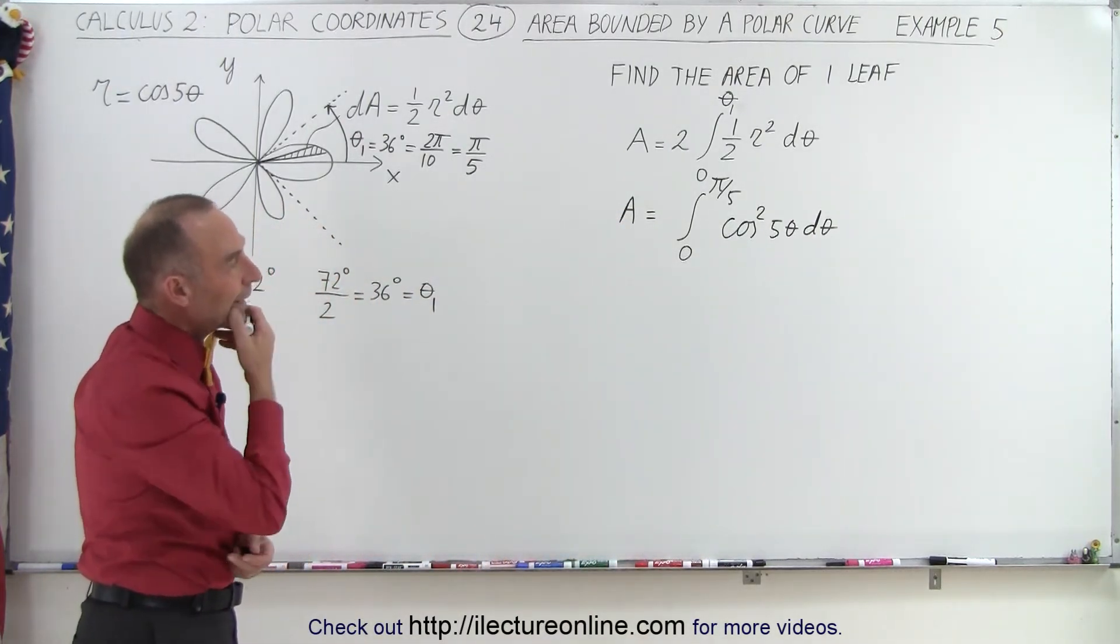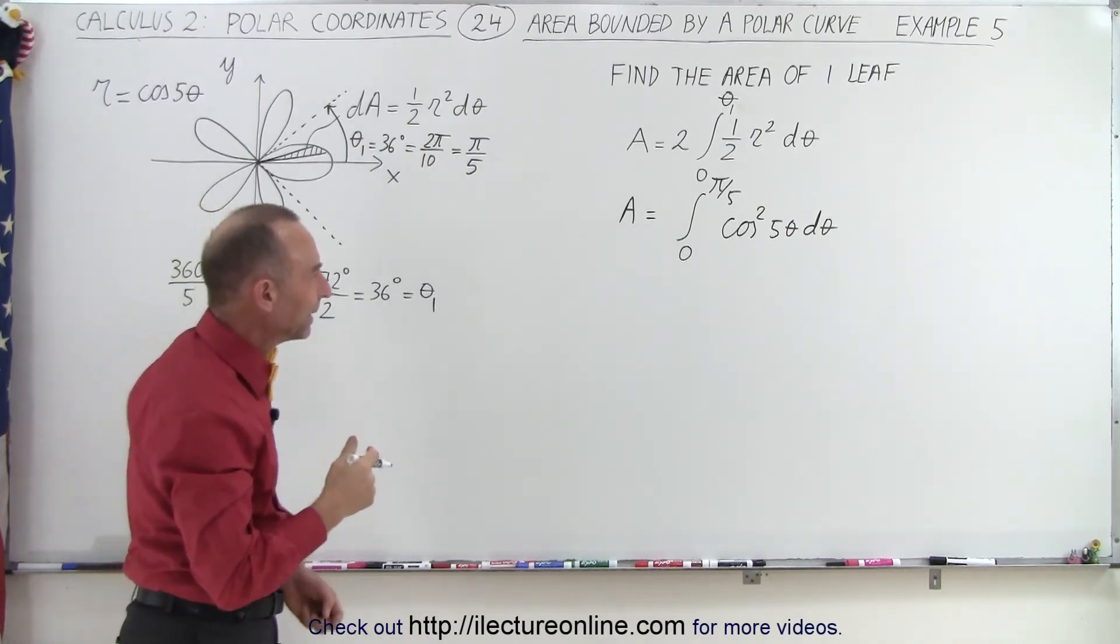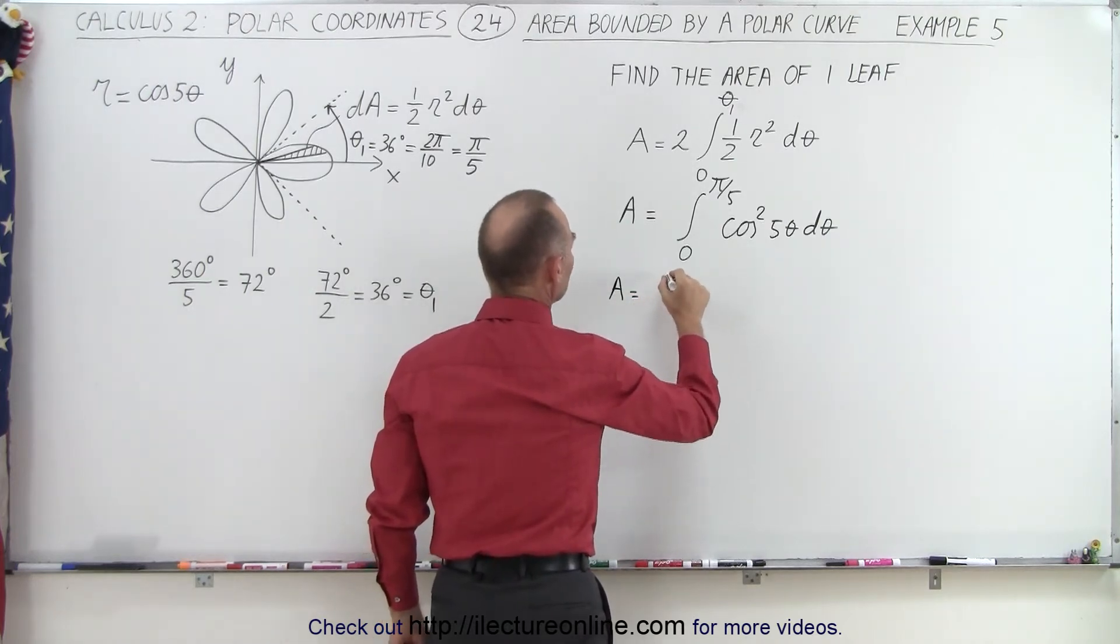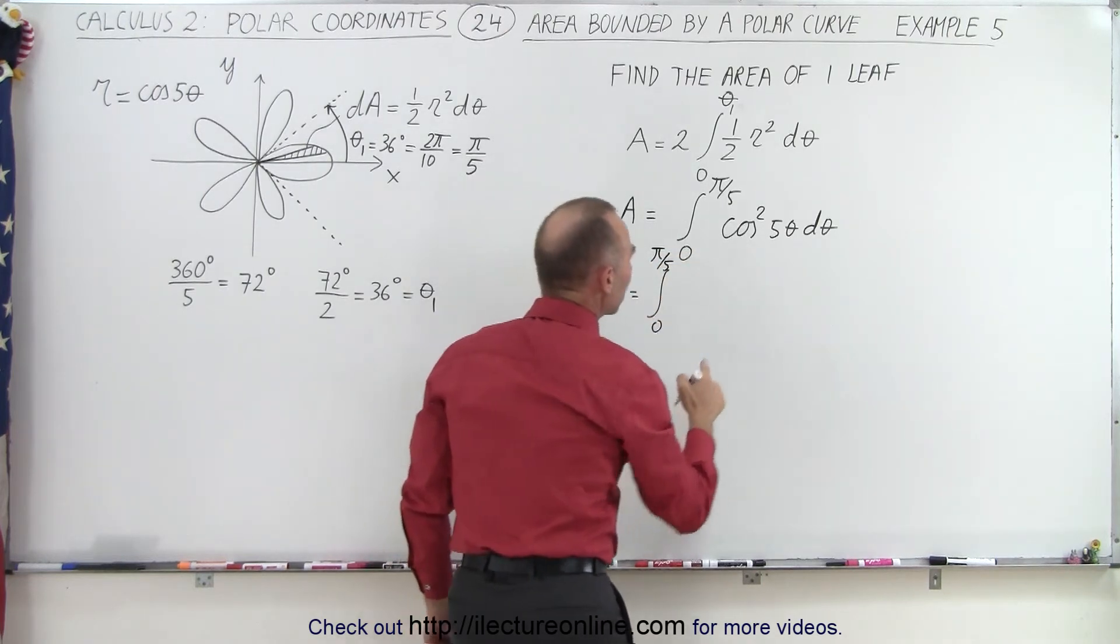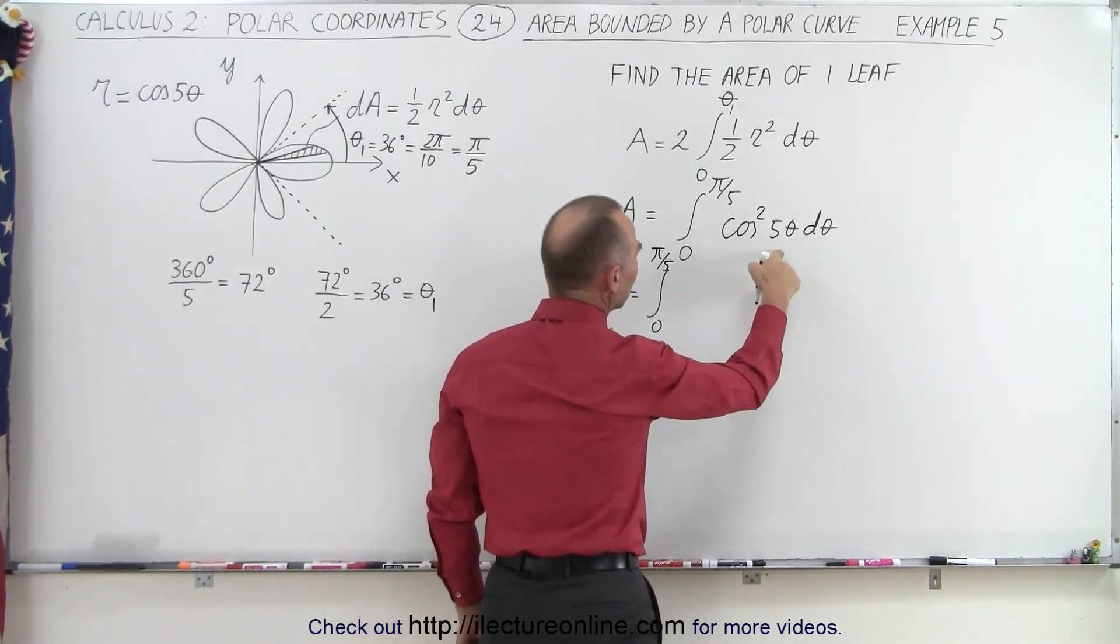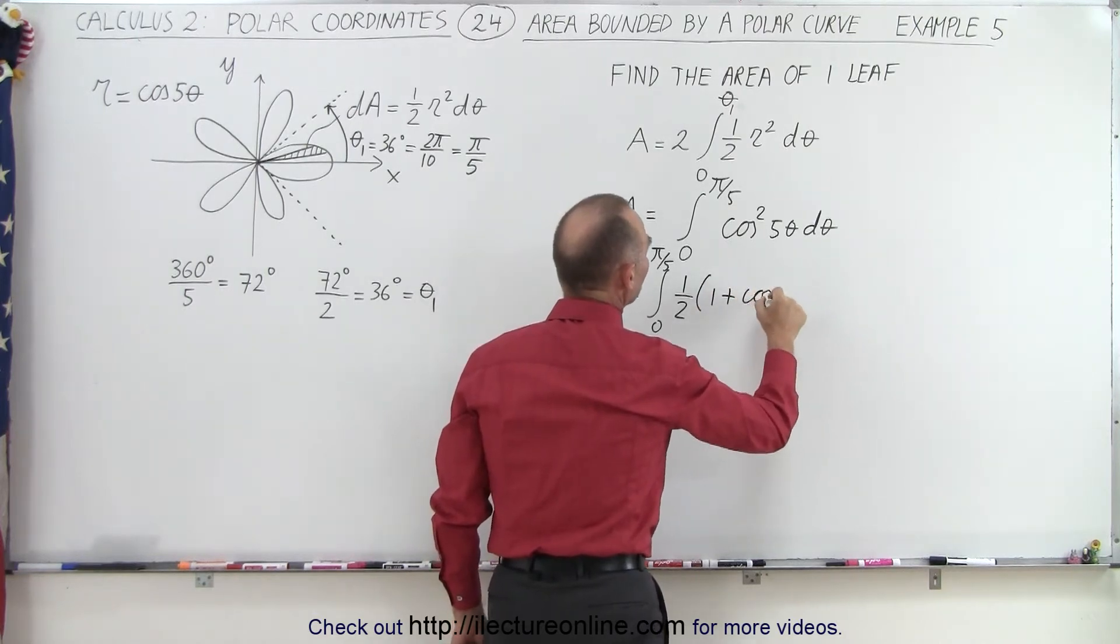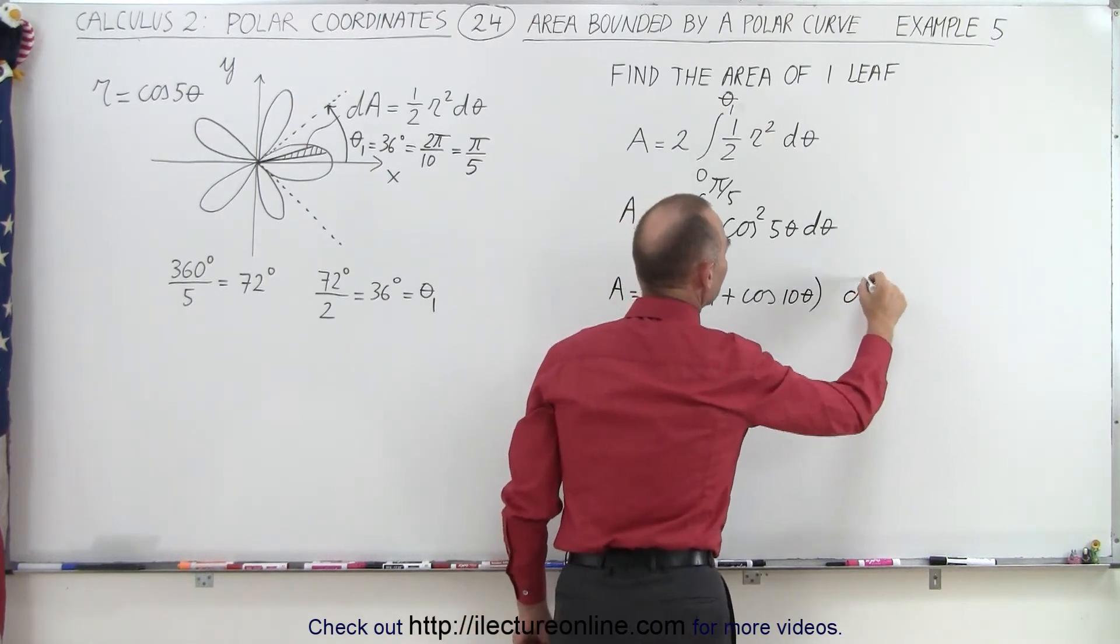Now, in order to integrate that, cosine squared of theta would be kind of hard to do, so we're going to use the identity. We can write this as the integral from zero to pi over five of one-half times one plus the cosine of twice that angle, so it would be 10 theta, times d theta.